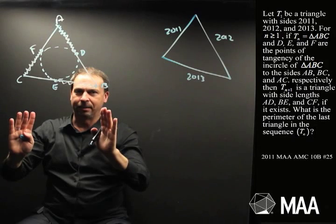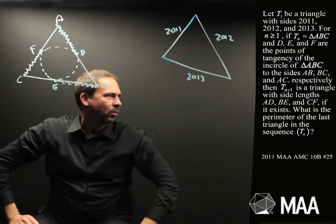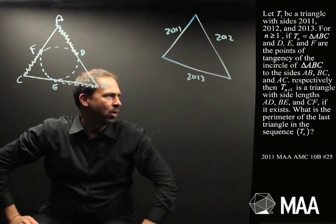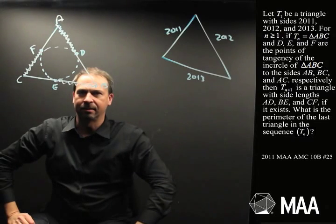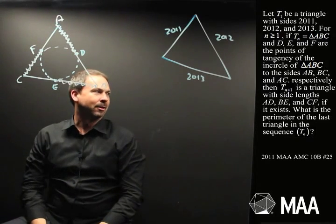I haven't actually read what the question is yet. What's the question? What is the perimeter of the last triangle in the sequence of these Tns? Oh my goodness. Okay.